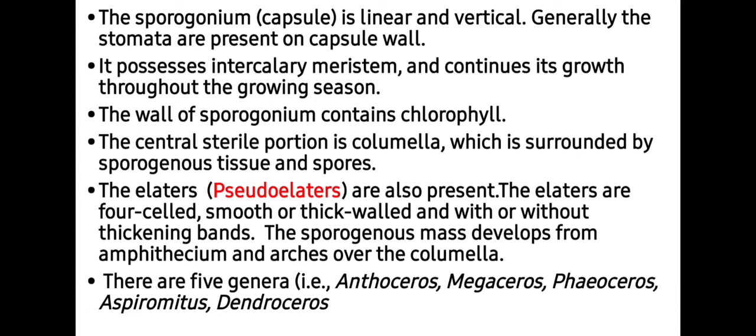The wall of the sporogonium contains chlorophyll, which means that the sporogonium is not a parasite — it is responsible for its own food preparation, meaning it is autotrophic. The central sterile portion is the columella, which is surrounded by sporogenous tissue and spores.